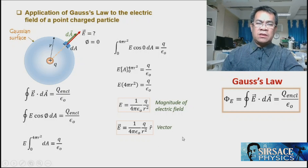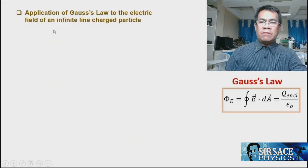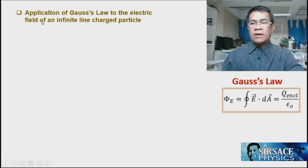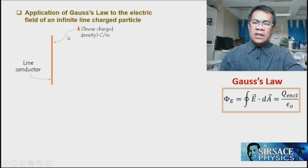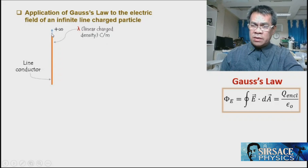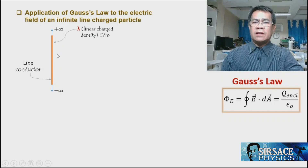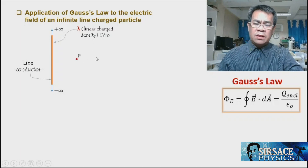This is the answer to the first application problem. Next, we apply Gauss's Law to the electric field of an infinite line charge. Consider a conductor line with a charge of λ (linear charge density — charge per unit length). This is an infinite line extending to infinity in both positive and negative directions. At point P, we want the electric field at distance r.